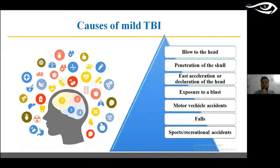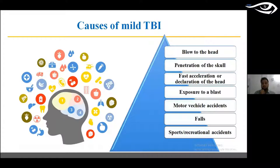The most common causes of mild TBI include a blow to the head, penetration of the skull, blast exposure, road traffic accidents, falls, or sports-related concussions. All these etiological factors have a secondary impact on the visual system, which will be discussed in further slides.